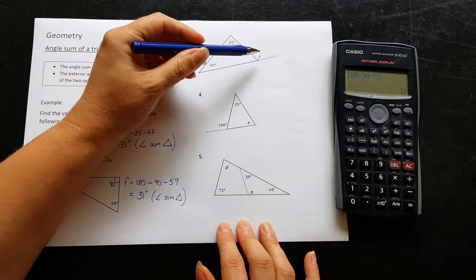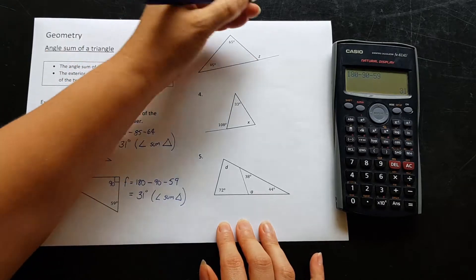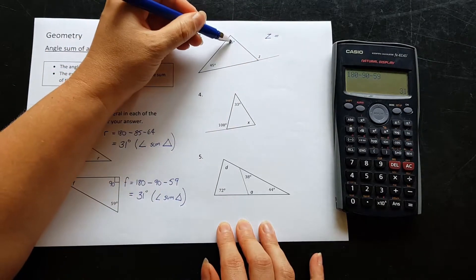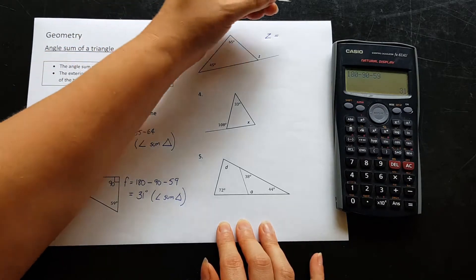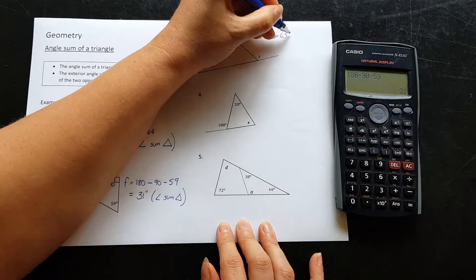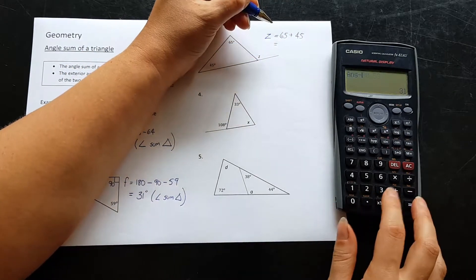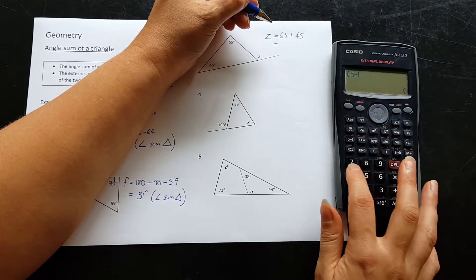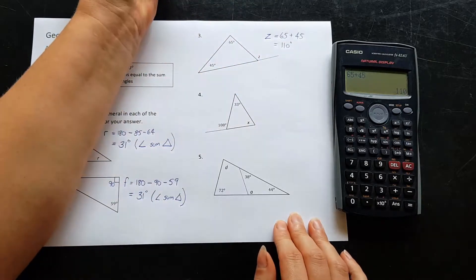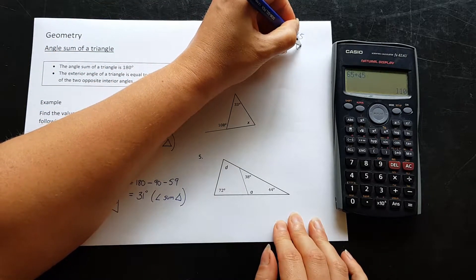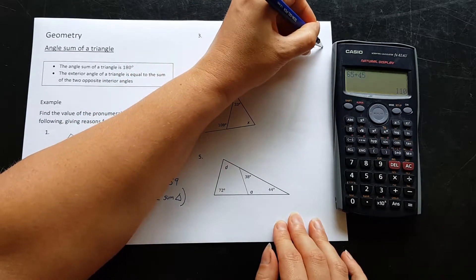Question three, this is our exterior angle out here. This angle z is equal to the opposite interior angles, which is these two angles added together. So I just have to go 65 plus 45. Add them up, 65 plus 45, 110 degrees. And we call that exterior angle rule. So I go ext for exterior angle rule.